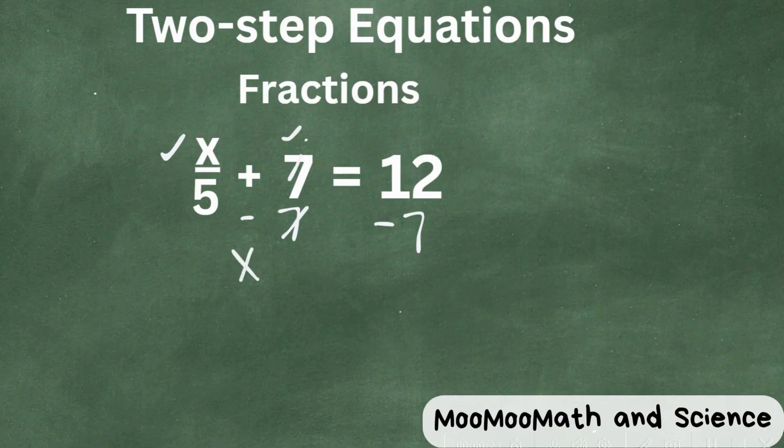And we bring down x over 5 equals 12 minus 7 is 5. So we're getting closer. Now we need to isolate the x.